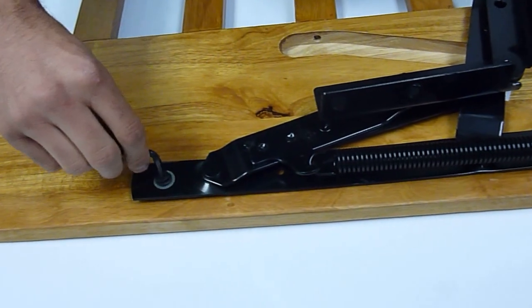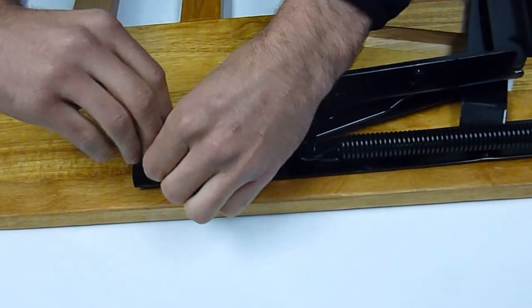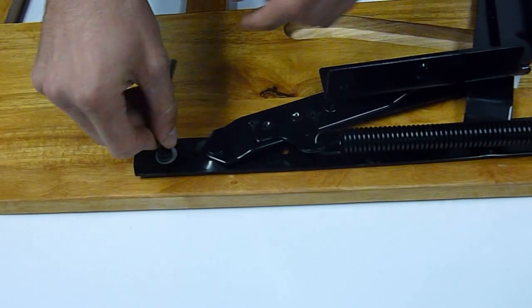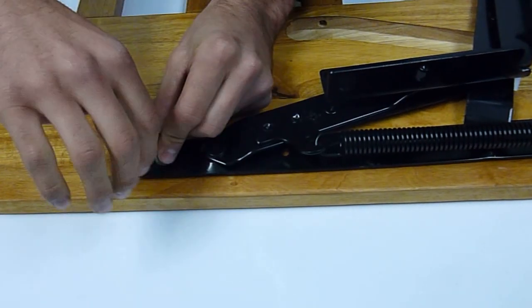Then you're going to take your allen wrench and tighten this up. You don't want to tighten it too tight, otherwise it could strip the bolts, but just tight enough that you know that the hinge is going to be secured on there.